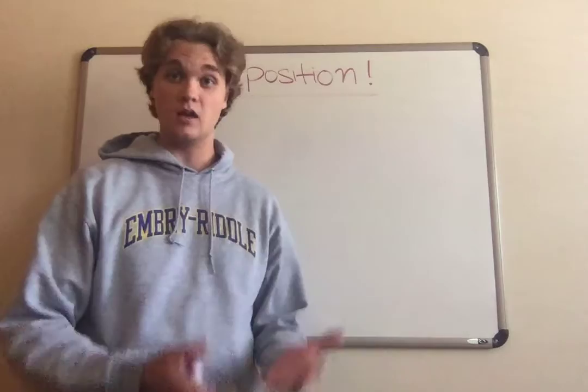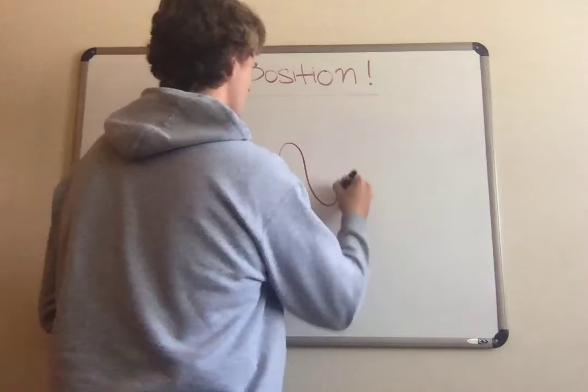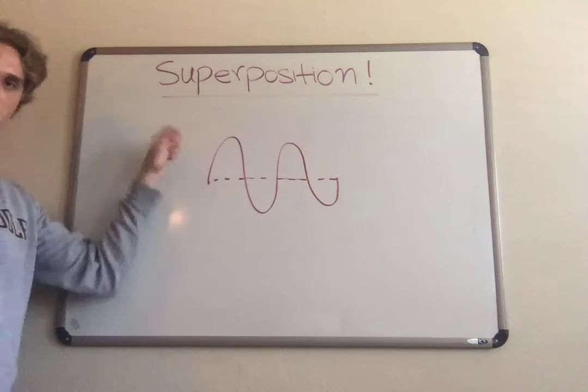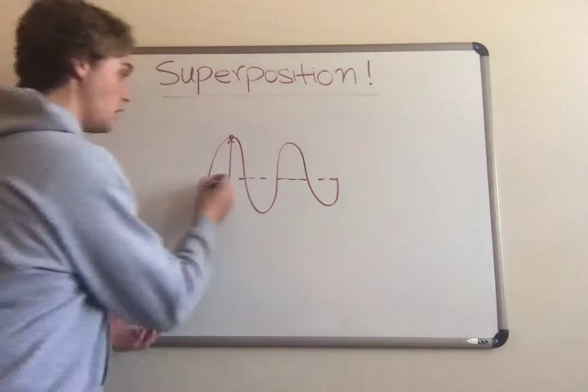So why can waves add on top of one another? Well, the way I like to think about it is: let's say we have a wave here - this is like me whipping a rope or something. Every one of these particles on here you can think of as being simply displaced by some displacement vector from the equilibrium position.